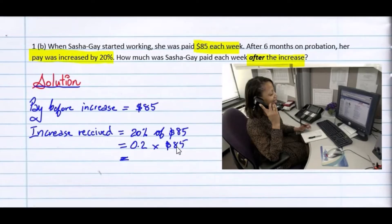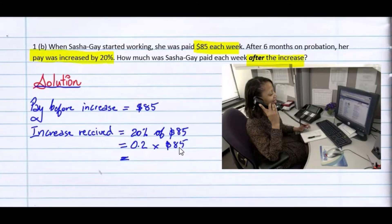Or we could say we want 10%, so we move the decimal place one to the left, and that will be 8.5. And since it's 20%, we're going to double it, which gives us 17.